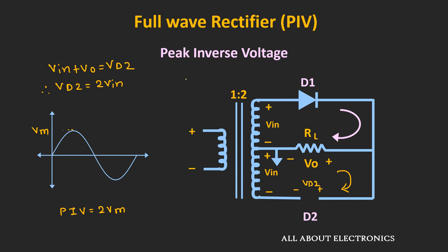So for the full wave rectifier designed using the center-tap transformer, the peak inverse voltage is equal to 2Vm. The PIV rating of the diode should be more than this value. For example, if we are applying an input signal with a peak voltage of 10V, then the peak inverse voltage of the diode should be more than 20V. So while designing the circuit for a specific voltage, we should always check the maximum reverse voltage which can be withstood by the diode.